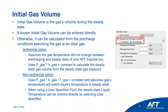I mentioned initial gas volume earlier as one of the required inputs. A known initial gas volume can be entered directly. But what do we do if we don't know the initial gas volume at steady state? We can click this 'calculate from pre-charge conditions' radio button instead and these options will drop down. From that we have two options: we can assume isothermal or we can do a non-isothermal calculation to get the initial gas volume at steady state.